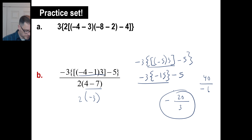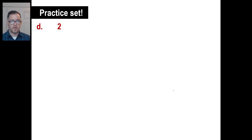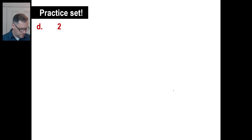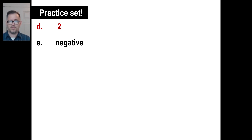Pause it and try C. C gives positive 36 because there are four negative factors — an even number. Try D: the answer is 2. Try E: that's a negative. We have an odd number of negative factors, and that's all we need to know — unless you want to multiply the entire thing out. Have a great day, and see you all next time.